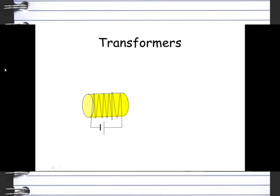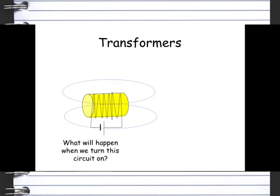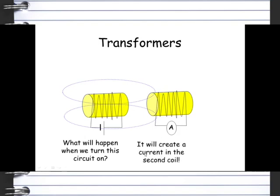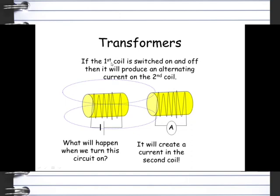Transformers start with a coil of wire surrounded by a magnet. Once we turn that on, we will create a magnetic field around the coil and the magnet. Then, if we have another coil close by, because we've got the magnetic field, which we can see here, that will induce a current into the opposing coil. So it will create a current in the second coil. If the first coil is switched on and off, it will produce an alternating current in the second coil. So if we go on, off, on, off, we will get an alternating current.